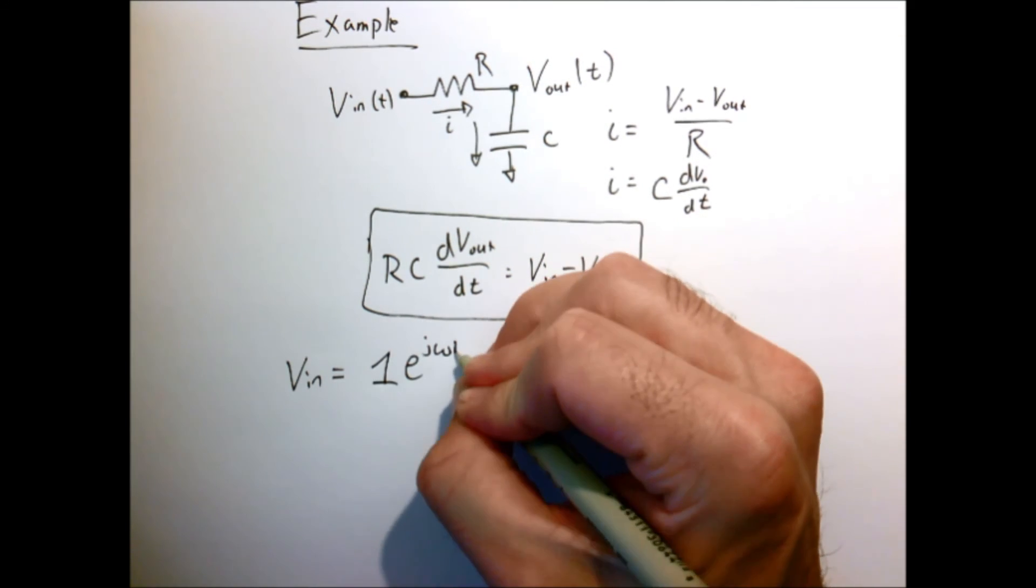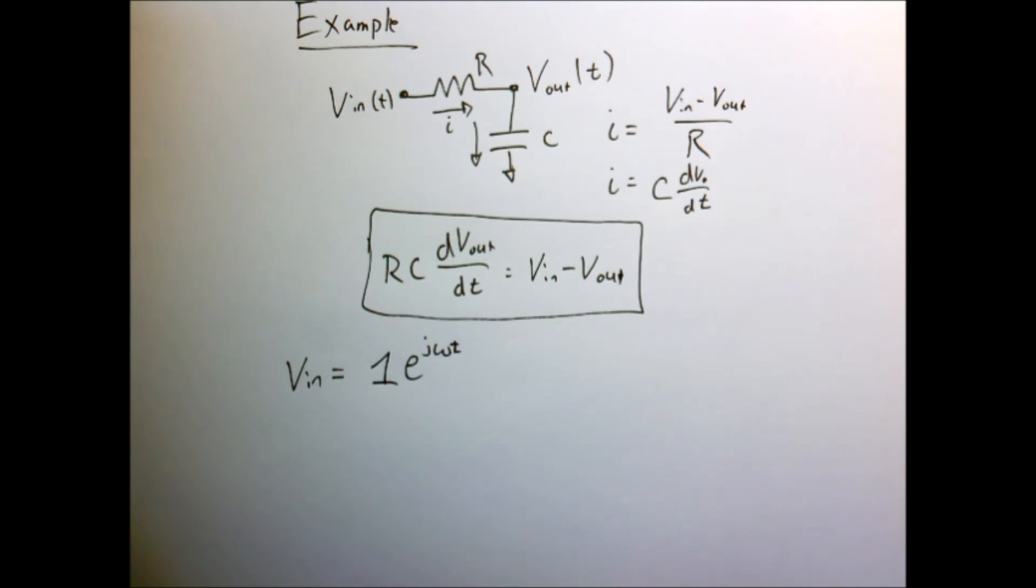So let's assume that my input voltage is 1 volt times e to the j omega T, which is equivalent to cosine of omega T plus j sine of omega T.